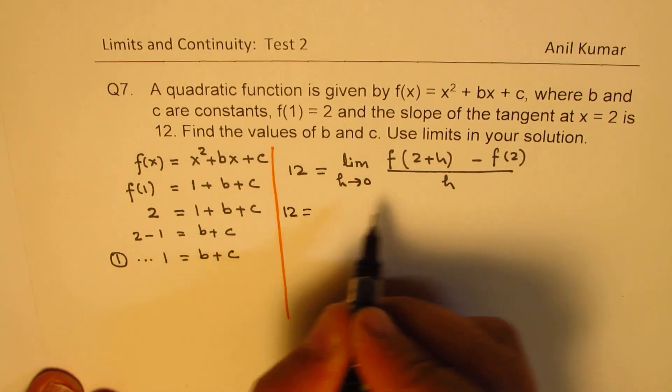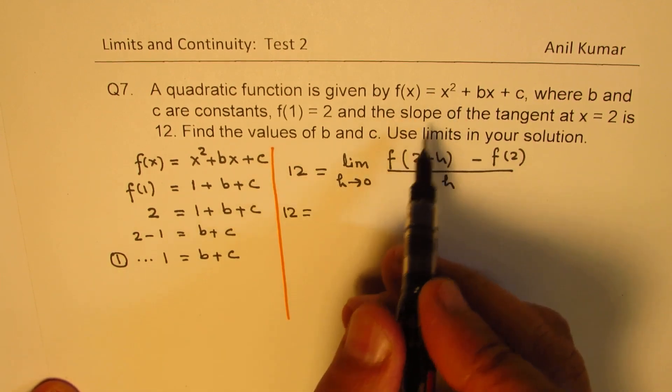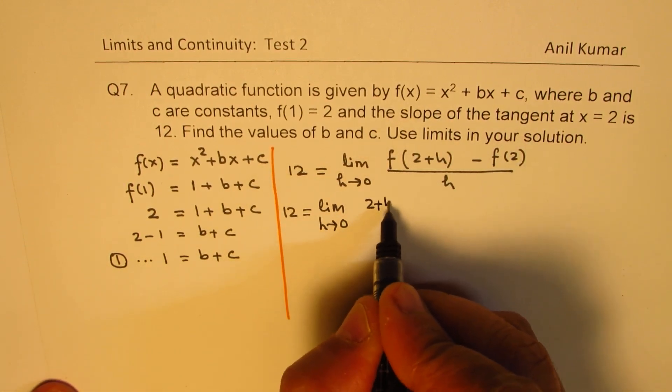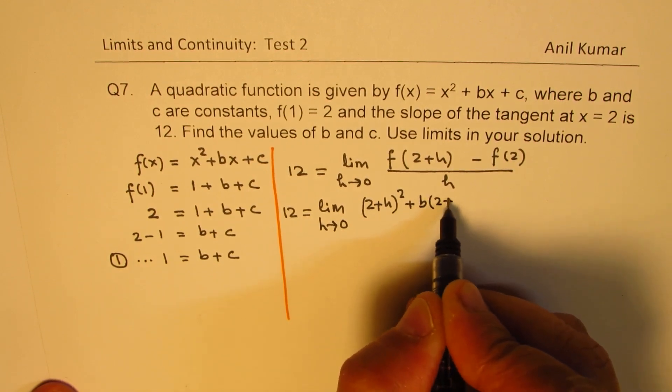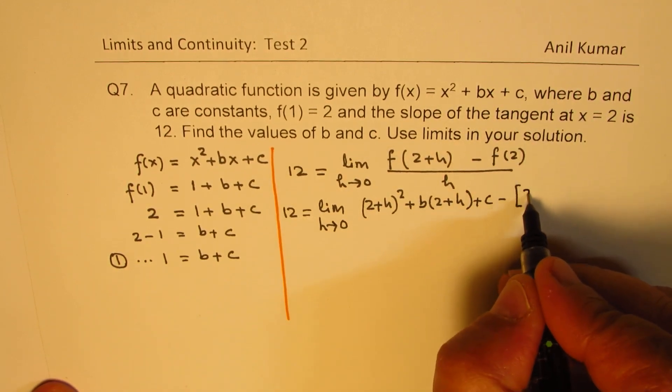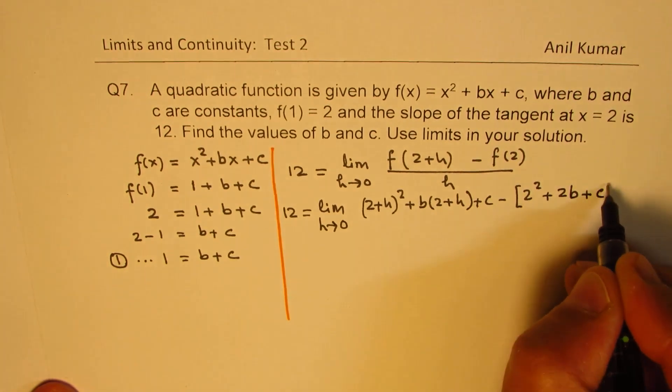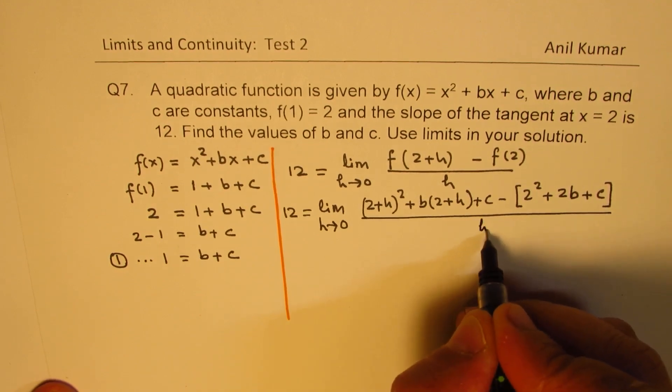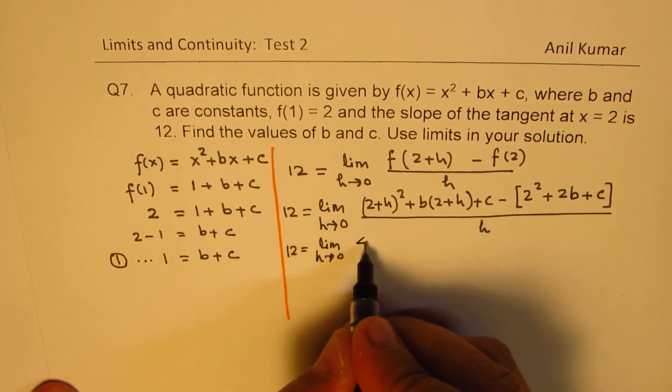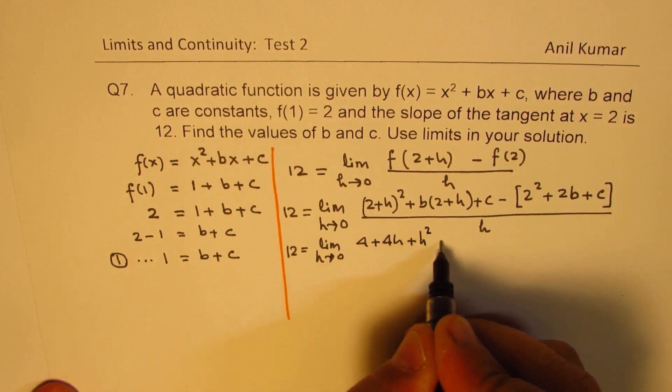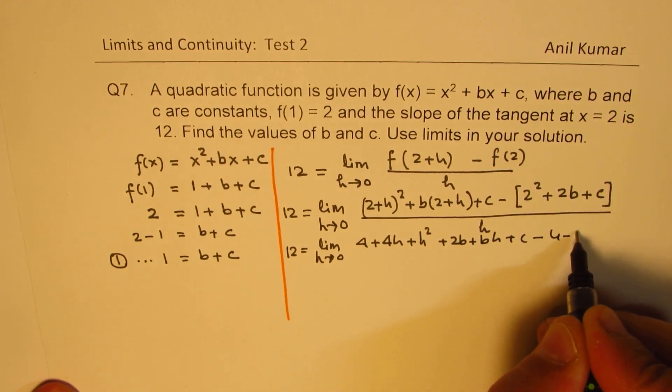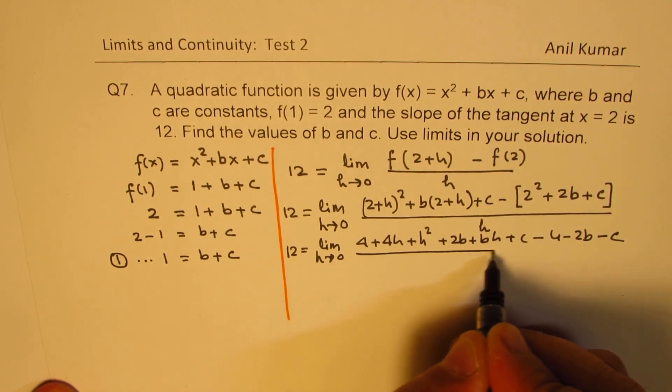Now let's substitute 2+h in the equation. So we get limit h approaches 0: [(2+h)² + b(2+h) + c - f(2)]/h. Substituting 2 we get [2² + 2b + c]/h. So we get 12 = limit h approaches 0: [4 + 4h + h² + 2b + bh + c - 4 - 2b - c]/h.